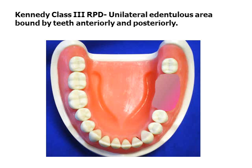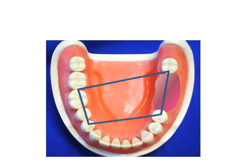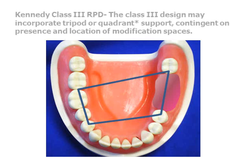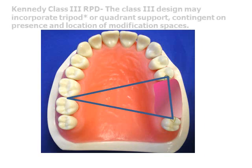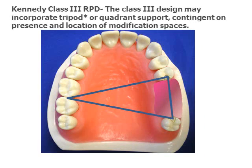The Kennedy Class 3 arch is described as having a unilateral edentulous area bound by teeth anteriorly and posteriorly. It is most commonly seen with modification areas on the contralateral side. The partial denture may employ quadrant or tripod vertical support depending on the presence and location of modification spaces.